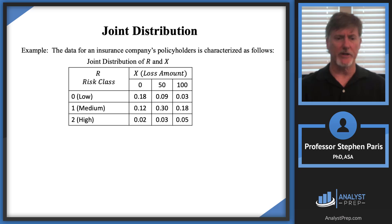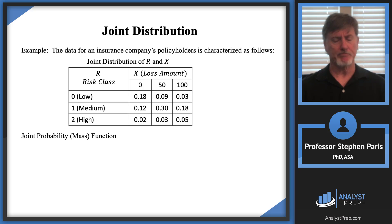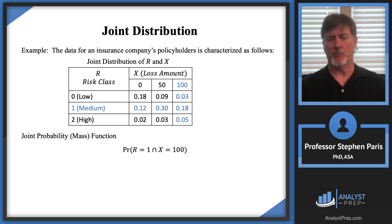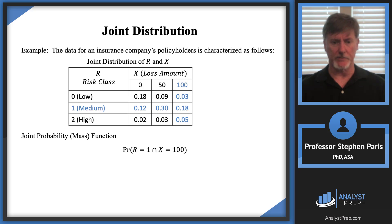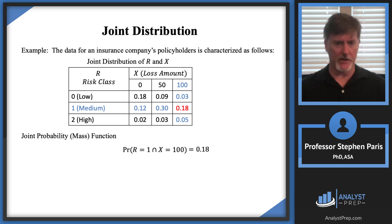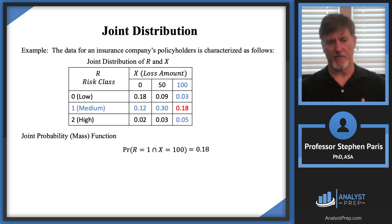The combined table is referred to as the joint distribution table of random variables cap R and cap X. We can look at what the joint probability mass function would be. For instance, the probability that cap R equals 1 and cap X equals 100 represents the probability that a randomly selected policyholder is medium risk with a loss amount of 100. Looking at that intersection in the table, we get 0.18 — an 18% chance.